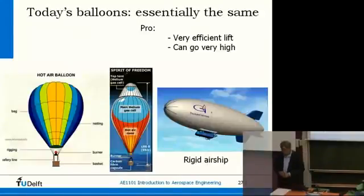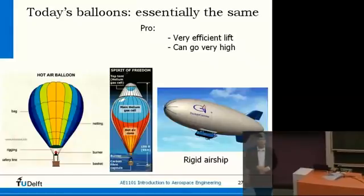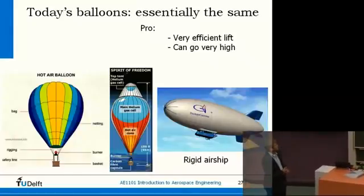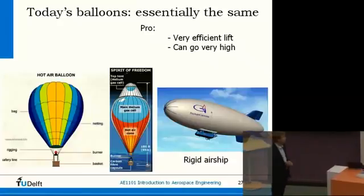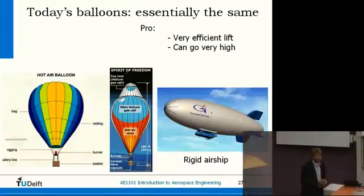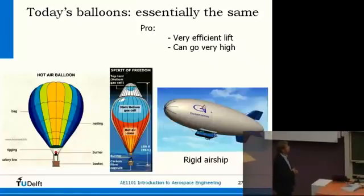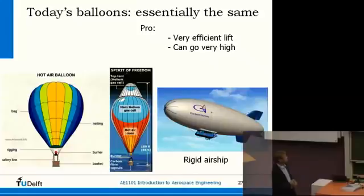Today's balloons are in principle the same — you see the simple shape on the left, or the more streamlined rigid airship on the right. Helium and hot air are the two main gases used for ballooning, and even combinations are sometimes used, for instance in the Spirit of Freedom, which was used for a record flight.